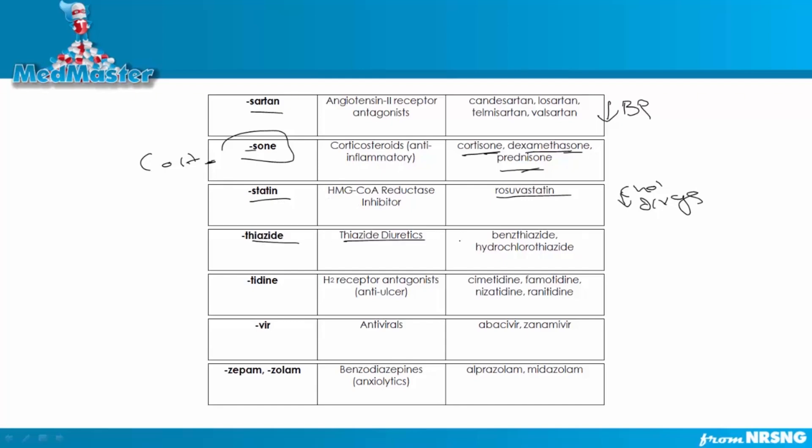Then we'll talk about thiazide, okay? Thiazide are going to be your thiazide diuretics. NCLEX likes to test on this because obviously we're looking for electrolyte imbalances with our diuretics. So these are, hydrochlorothiazide will be one that you'll probably test it on. Tadine, tadine, these are your H2 receptor antagonists. It can be given to help prevent ulcers. Big one is going to be famotidine and rhinetadine. So, yeah, just look for the tadine.